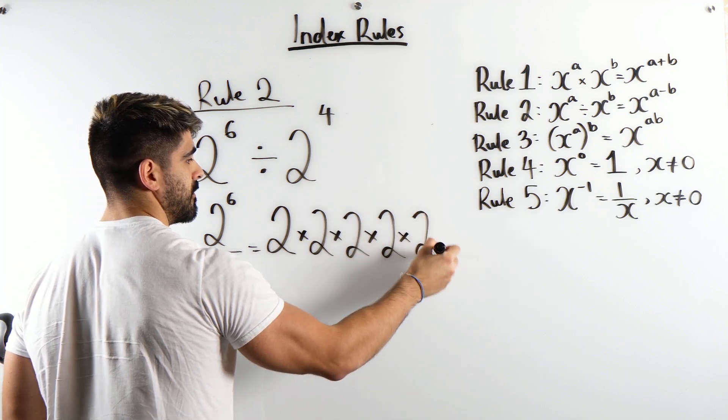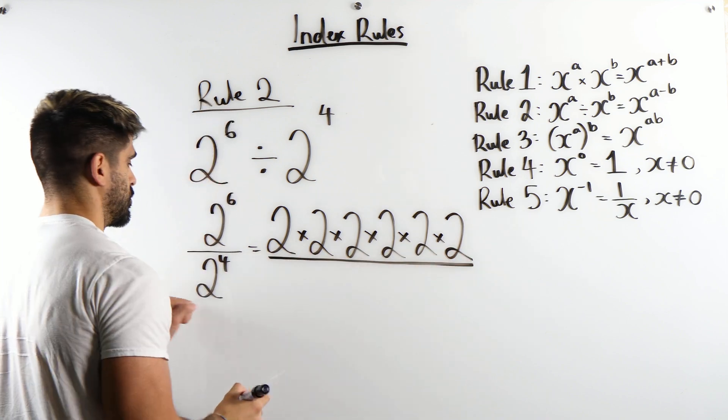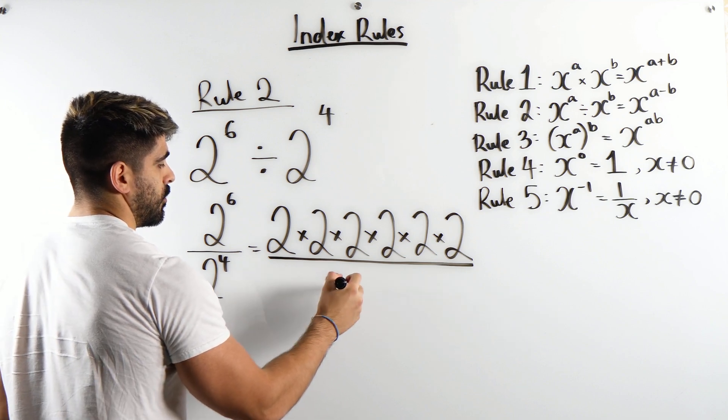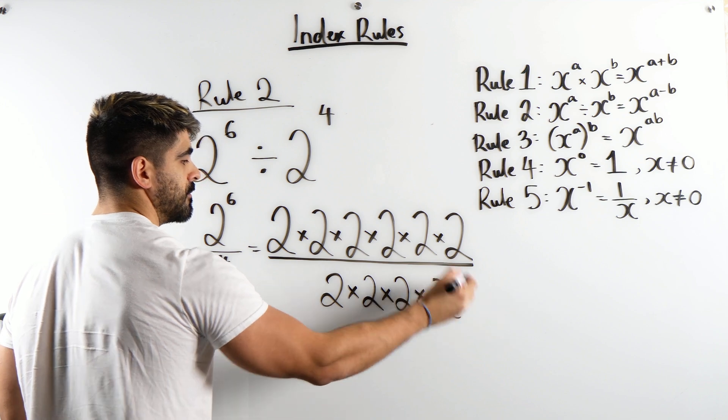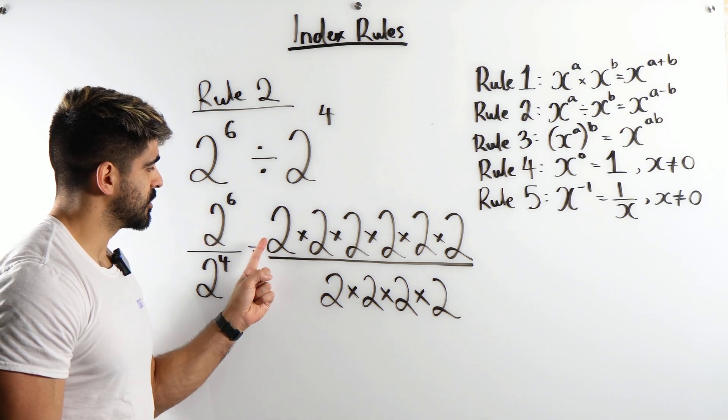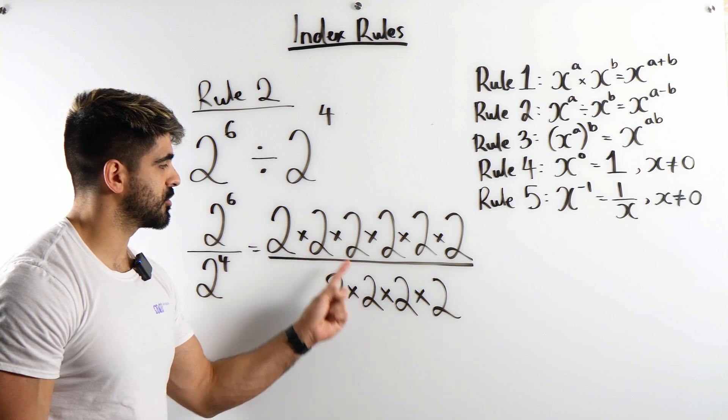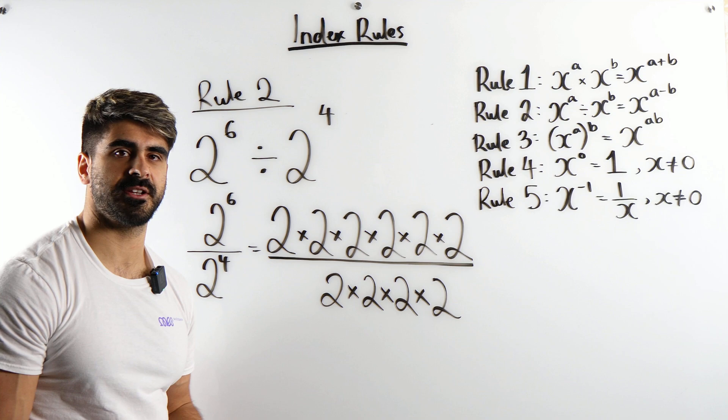2 to the power of 6 means we're taking the number 2 and we're multiplying it by itself 6 times. So 4, 5, 6 divided by 2 to the power of 4 which is 1, 2, 3, 4. Now, here if you read you can see you're doing 2 divided by 2, 2 divided by 2, 2 divided by 2, etc.